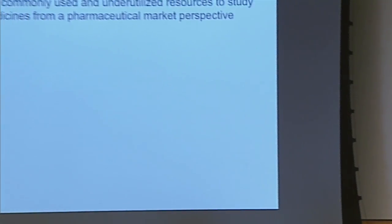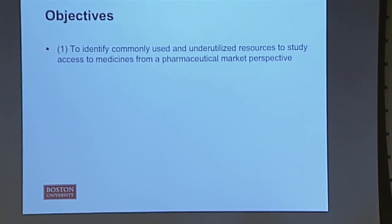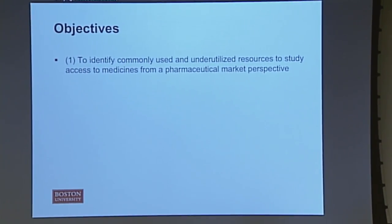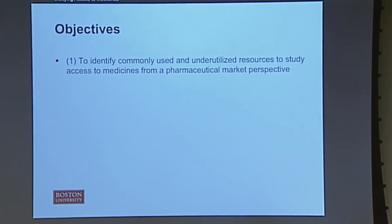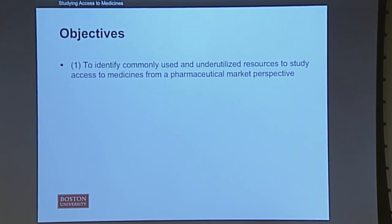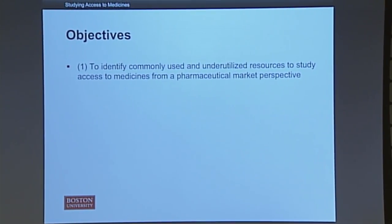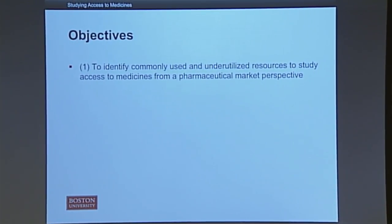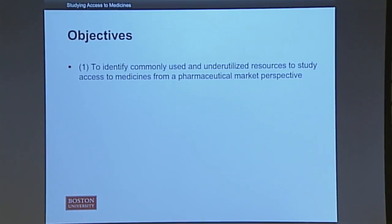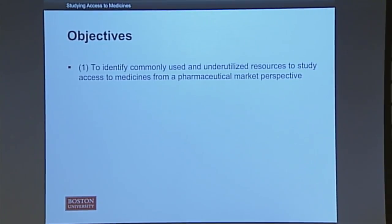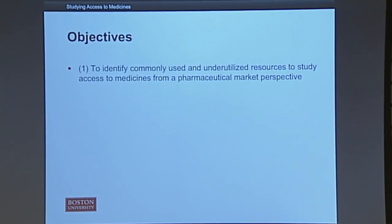The first objective was to identify commonly used and underutilized resources to study access to medicines. This was looking at market reports, looking at resources provided by many international organizations. It wasn't a systematic review, but it looked at many articles and many other studies in the past, and many organizations with the resources available that you could use to study it.